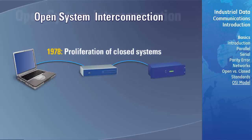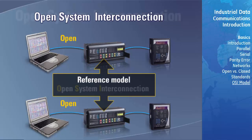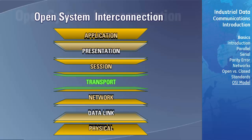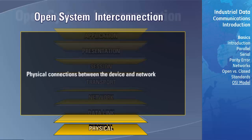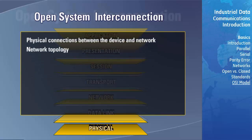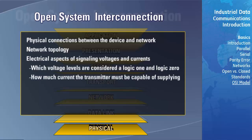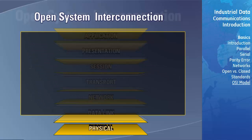Faced with the proliferation of closed network systems, in 1978 the International Standards Organization defined a reference model for communication between open systems, called the Open System Interconnection Model. This model is composed of seven layers, each with a defined purpose that interfaces with the layer above and below it. The physical layer includes elements involved with the actual transmission and reception of signals, such as physical connections between the device and the network, network topology, electrical aspects of signaling voltages and currents — for example, which voltage levels are considered logic 1 and logic 0 and how much current the transmitter must supply — signal modulation technique such as simple on-off, FM, or AM, and mechanical aspects such as connectors and physical medium.